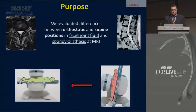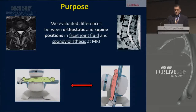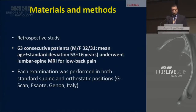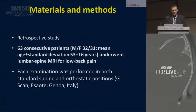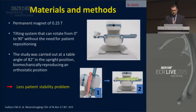Our purpose was to evaluate differences between orthostatic and supine positions in facet joint fluid and spondylolisthesis at MRI. We performed a retrospective study of 63 consecutive patients who underwent lumbar spine MRI for low back pain.